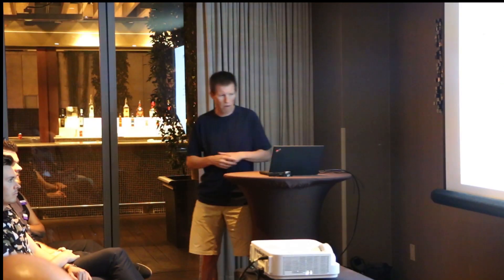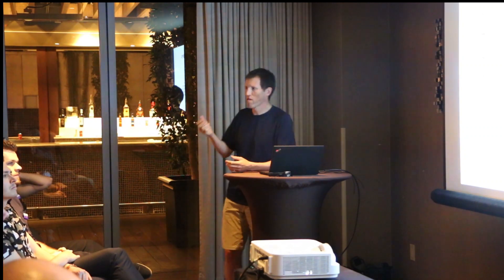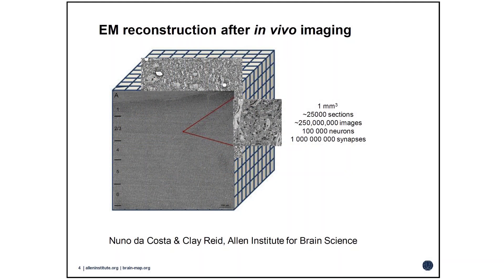The first project is really primarily an electron microscopy project. Nuno DeCosta and Clay Reed at the Allen Institute are in the process of reconstructing a cortical column — essentially a one-by-one-by-one-millimeter volume of tissue where they'll have the complete electron microscopy reconstruction. That's a really big undertaking. What they really want is to know the functional properties of every cell in that volume.